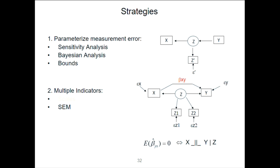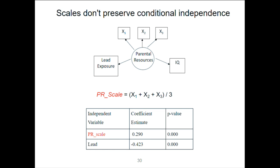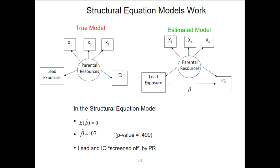Someone asks: in a scale, instead of an unweighted average, if you use a weighted average defined by factor analysis or principal component analysis, what happens? Same thing — doesn't work. A latent variable structural equation model is a combination of factor analysis and a structural equation. I generated data from this model, estimated it, and the coefficient beta turned out to be insignificant and small. From that I conclude that lead and IQ are screened off by parental resources even though I didn't measure it directly. So this strategy can really work.